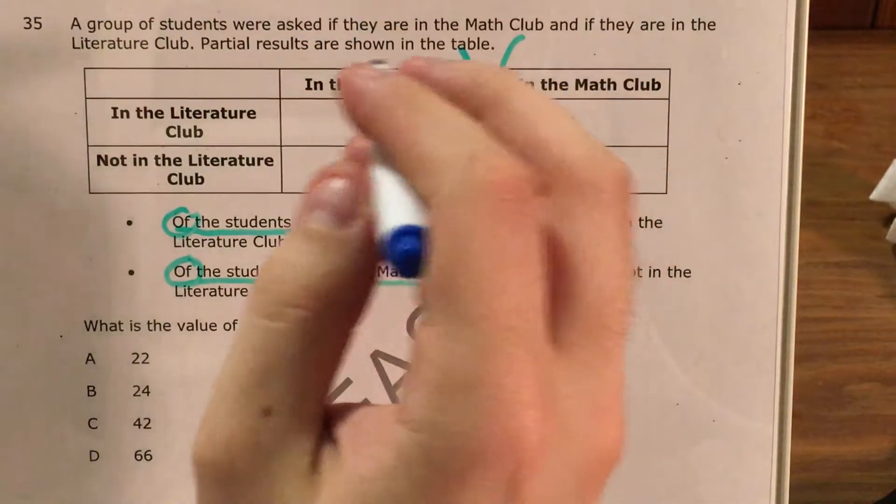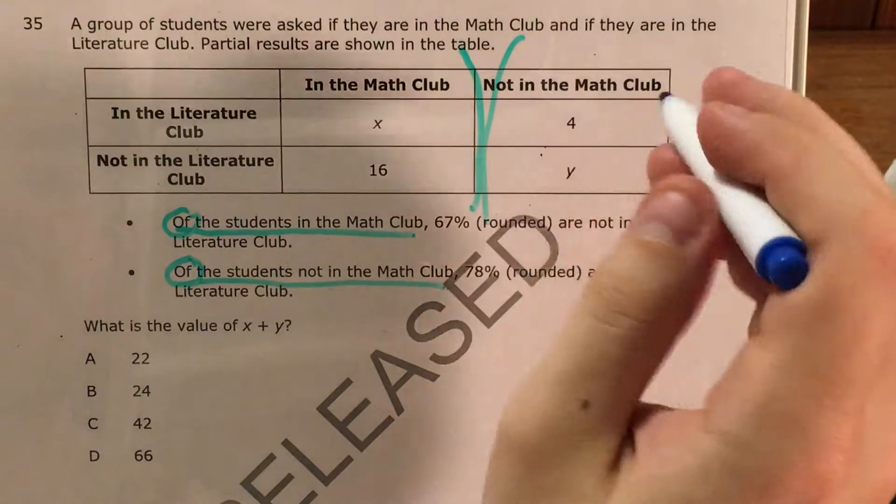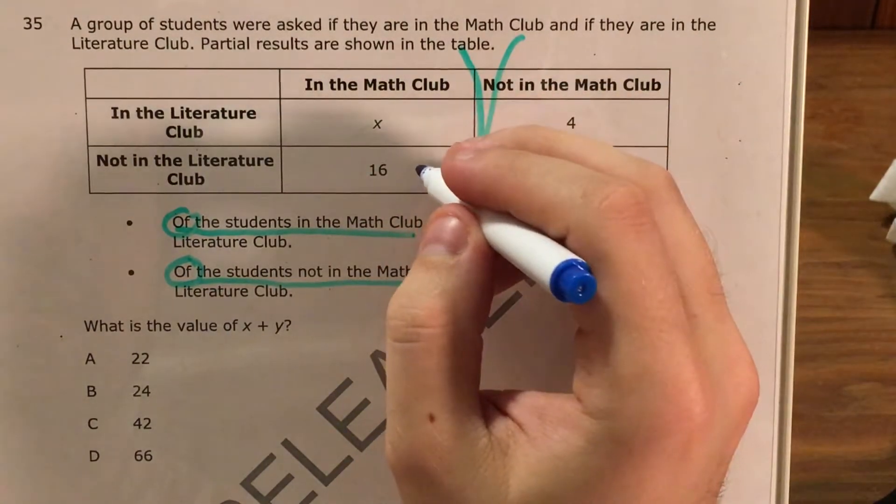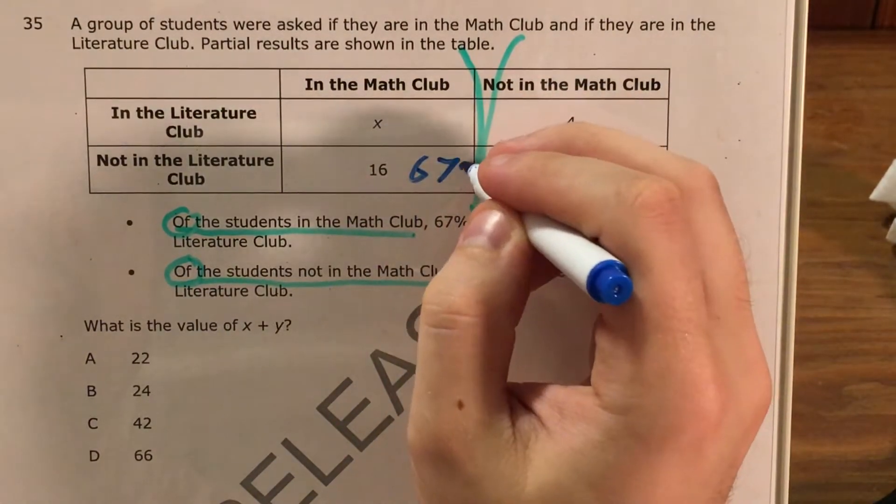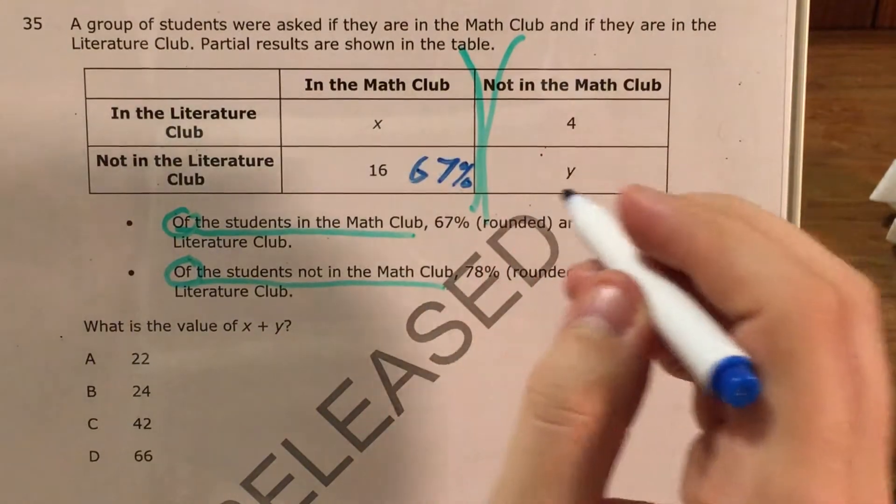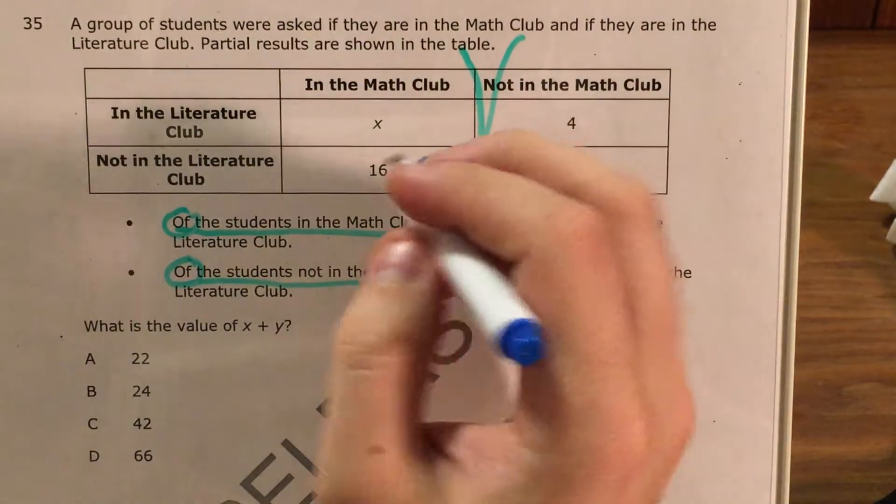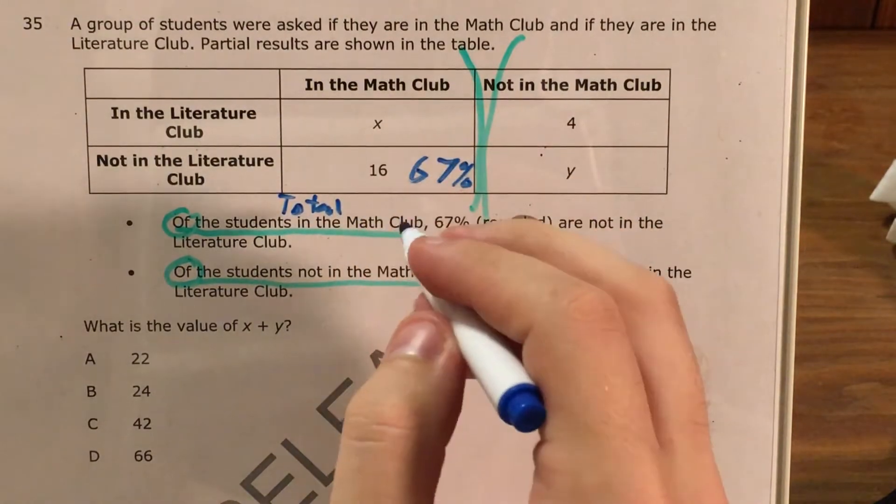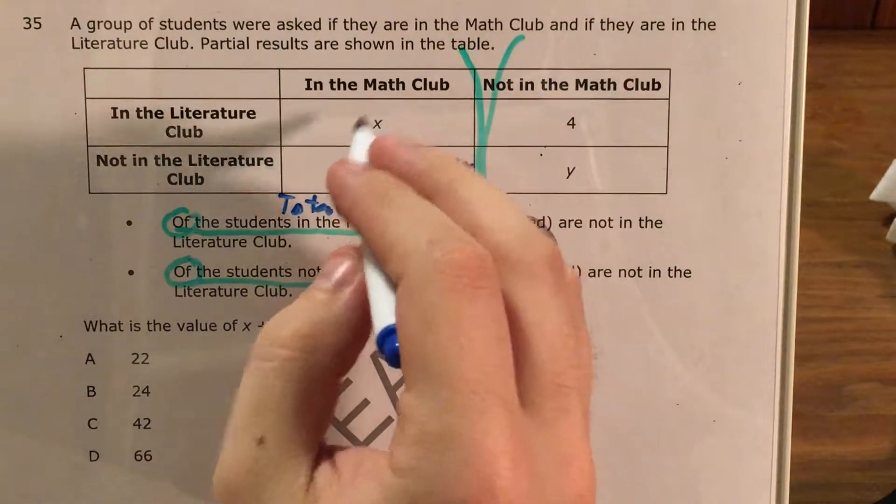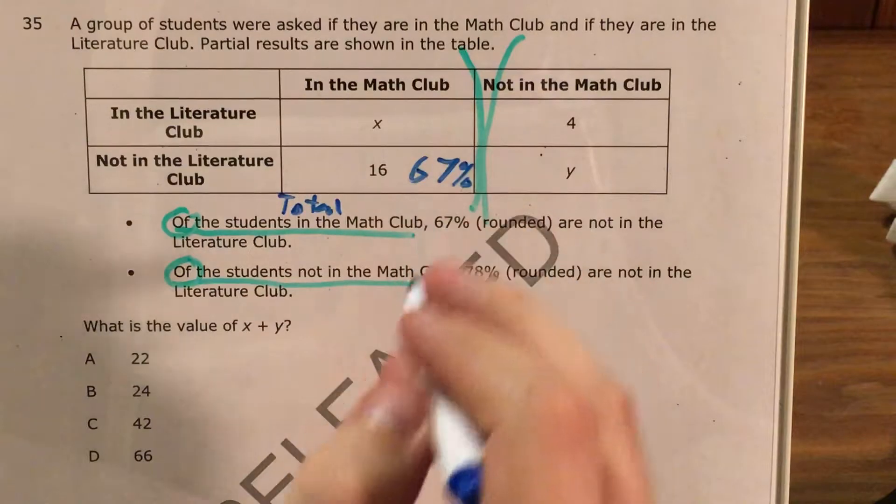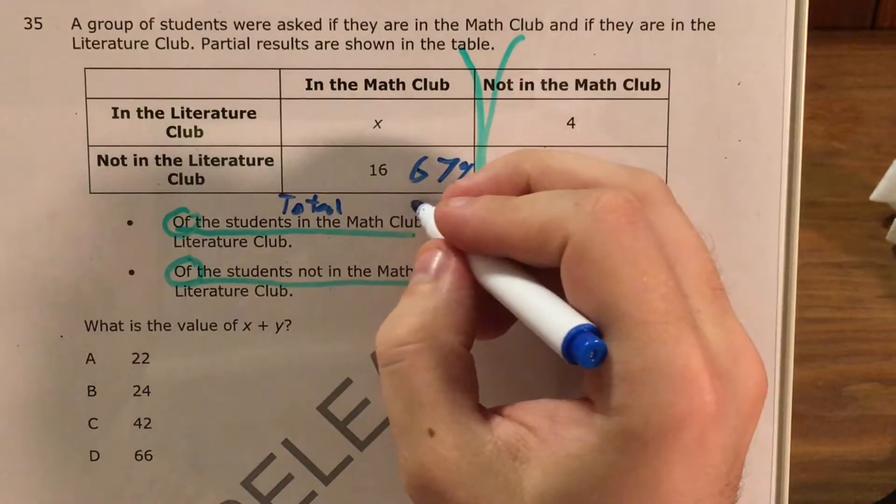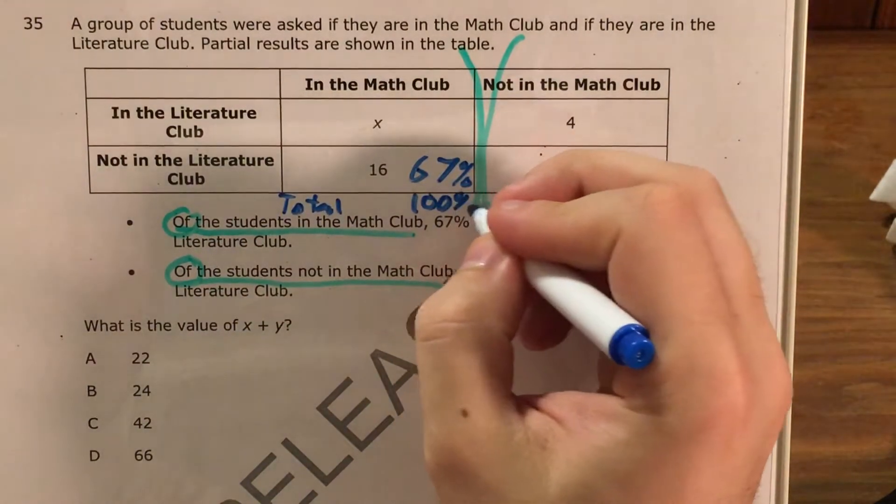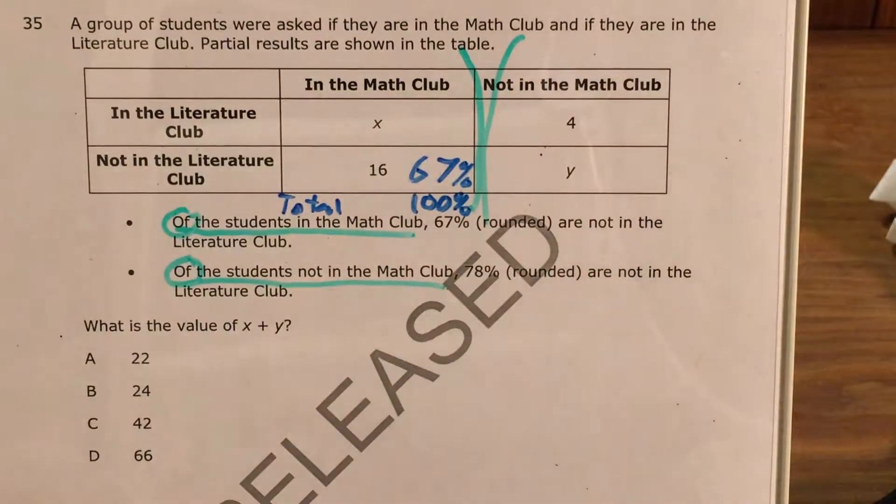All right, so with that we'll go ahead and solve this using some ideas of percents. We'll start with the in the math club part. The question says that of the students in the math club, 67% are not in the literature club, and now I'm going to go ahead and add a third row to this, and that's going to be my total. I will not actually need to figure out my total people in the math club and not in the math club, but I will put a total down for my percents and make that 100.